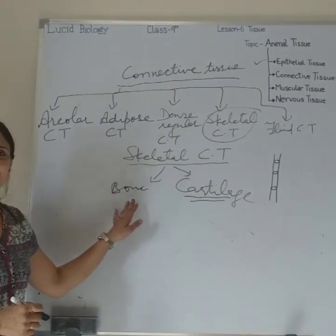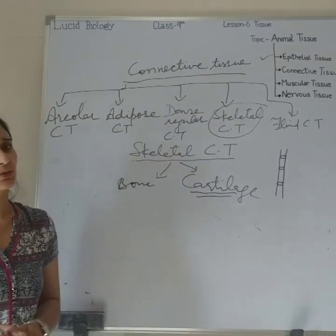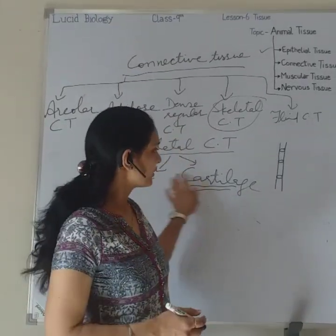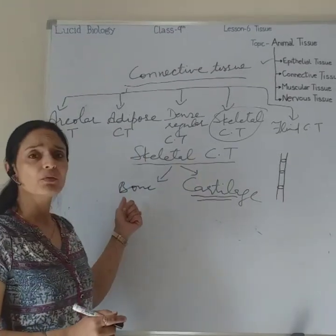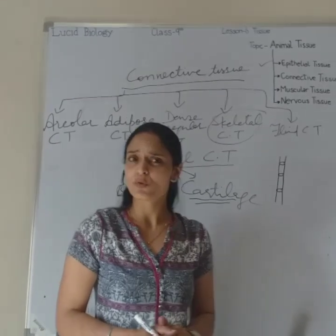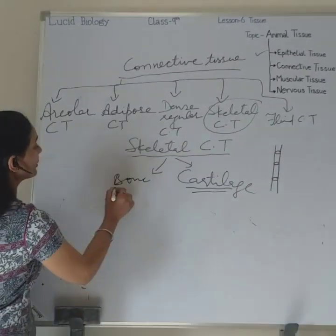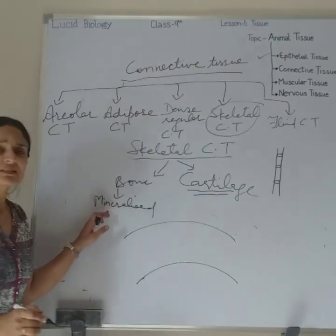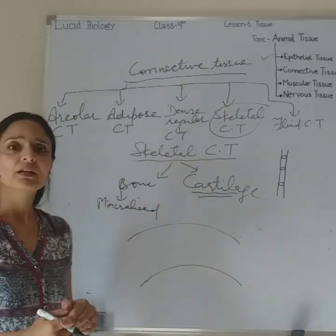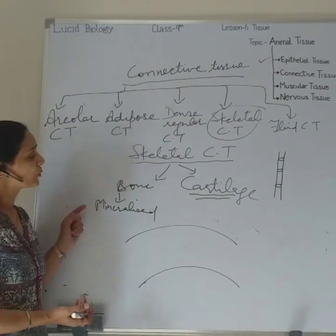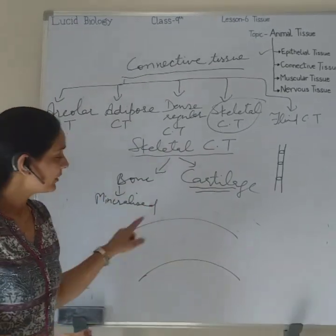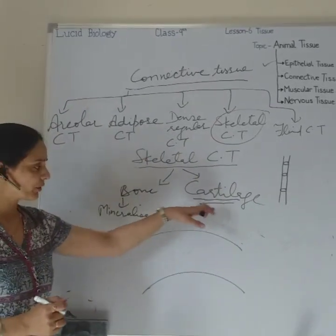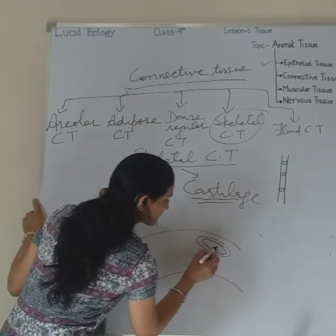Now we are going to study bone, which is another type of specialized connective tissue. Bone is strong and highly vascular, meaning it has a good supply of blood vessels. Unlike cartilage, bone has a good blood supply. It is very strong and rigid because it is highly mineralized — it has an abundance of minerals, including calcium and magnesium. The matrix of bone is also made up of protein, but the matrix is arranged in the form of concentric rings.